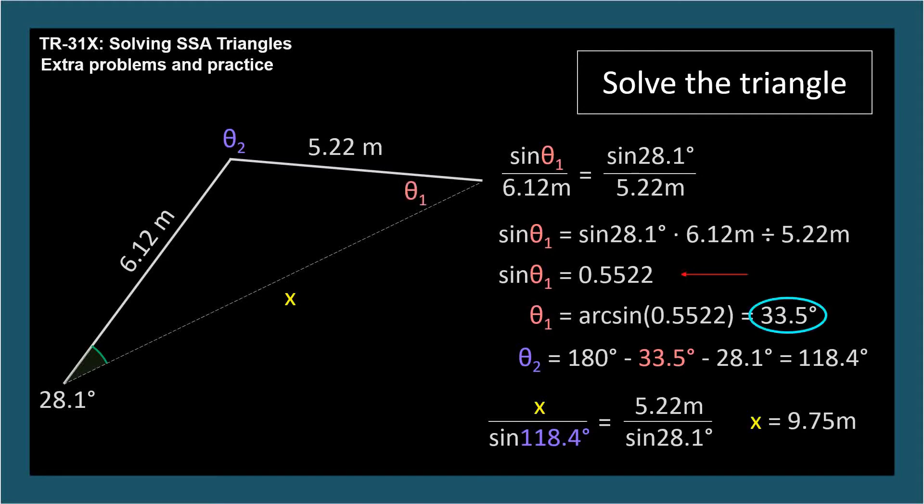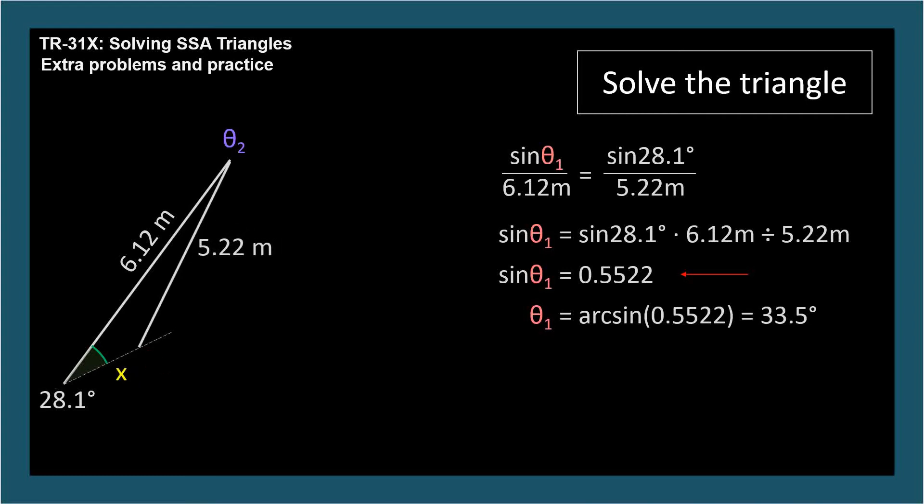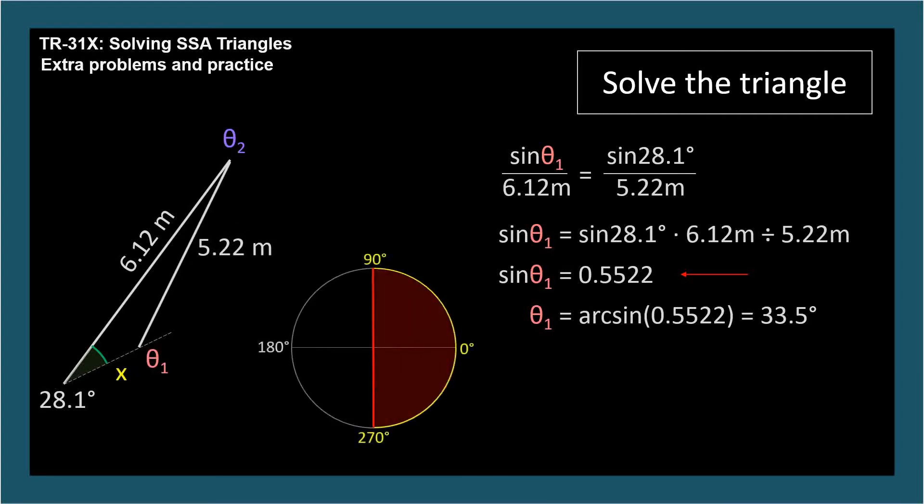Let's go back to theta sub 1, which we found as the arcsine of 0.55222. The arcsine function returns acute angles, but it's possible theta sub 1 could be obtuse, and our triangle would look something like this. The arcsine function gave us the acute angle whose sine is 0.55222, here. But there's an obtuse angle over here whose sine is also 0.55222.